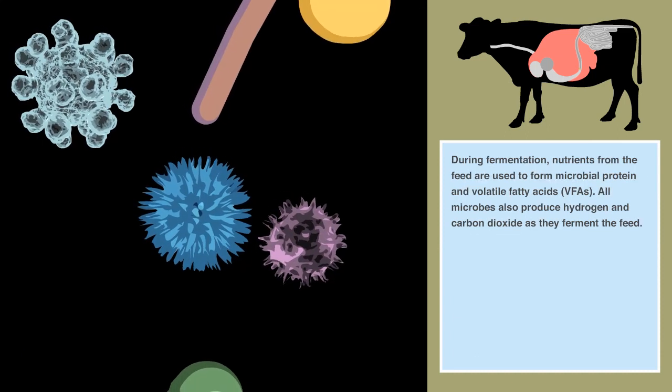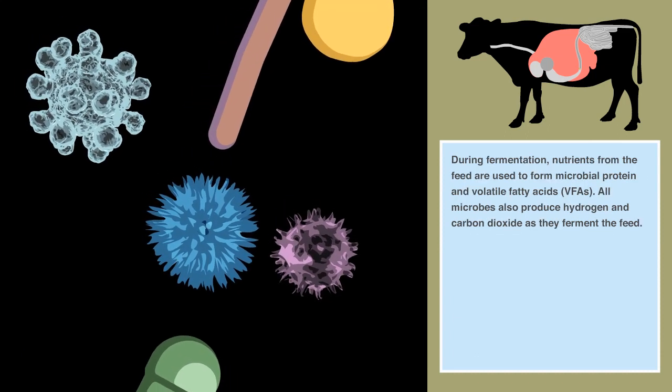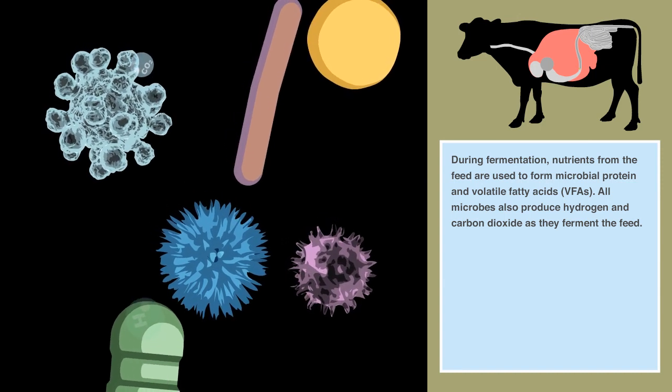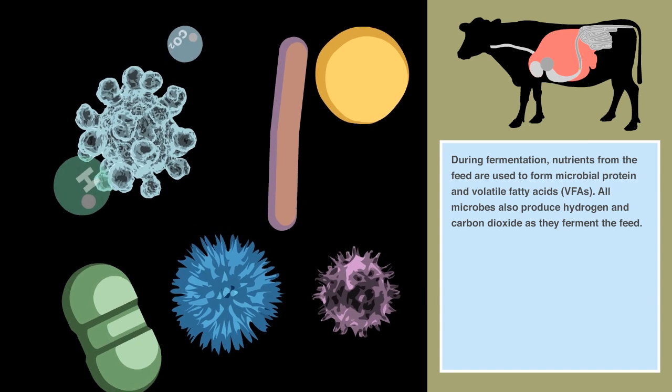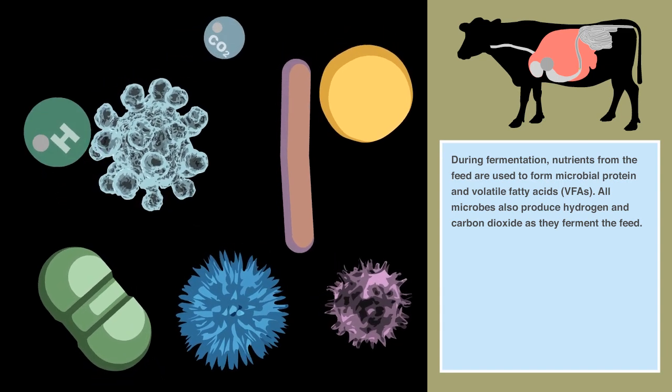During fermentation, nutrients from the feed are used to form microbial protein and volatile fatty acids, or VFAs. All microbes also produce hydrogen and carbon dioxide as they ferment the feed.